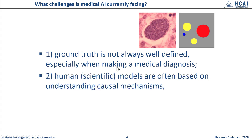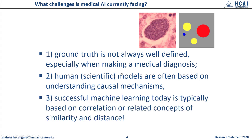Second, human scientific models are often based on understanding causal mechanisms. And third, successful machine learning today is typically based on correlation or related concepts of similarity and distance. Among others, this was the motivation for the development of our Kandinsky Patterns exploration environment, which I show you in the next slide.